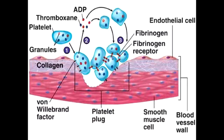First, there would be some sort of damage to the endothelium which will expose the collagen. To this exposed collagen, von Willebrand factor will bind. Once von Willebrand factor has bound to the exposed collagen, a platelet will come along and bind by its glycoprotein 1B receptor to that von Willebrand factor. The platelet will then release ADP and calcium, which will start the coagulation cascade.